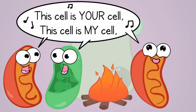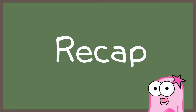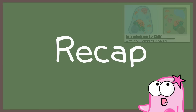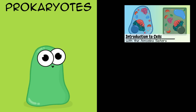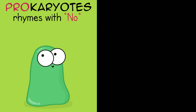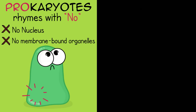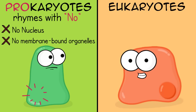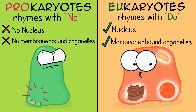Symbiosis means these organisms live together. So just to recap from our Intro to Cells video: when you think of prokaryote, think of 'pro' rhyming with 'no'—no nucleus, no membrane-bound organelles. Eukaryotes, on the other hand—remember 'you' rhymes with 'do'—and they do have a nucleus and other membrane-bound organelles.